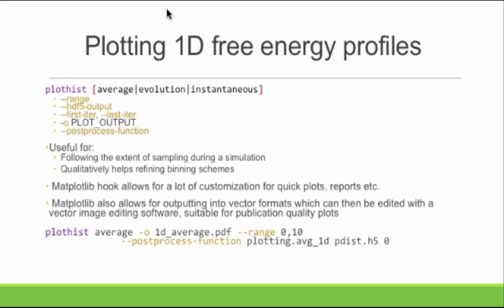The second tool is another flexible tool that can plot — it has a couple of different modes. This is basically designed to plot the actual histograms you pulled in. It has three modes: average, evolution, and instantaneous. The instantaneous one plots over a single iteration, which I'm not going to talk about. Average averages over a certain iteration window; evolution shows the evolution over the number of weighted ensemble iterations. It takes a range option depending on how you want to plot — probabilities, free energies (negative log of probabilities), or histogram frequencies.